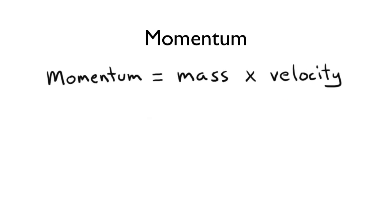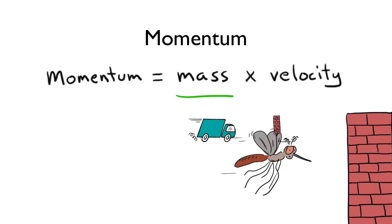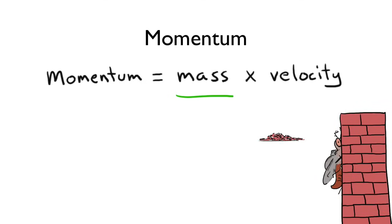This means that if something is moving, there are two ways to affect its momentum. One, there's the mass. For the same speed, a massive truck has so much more momentum than a mosquito.